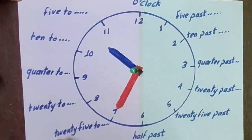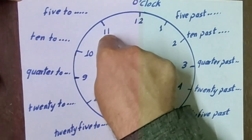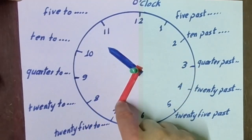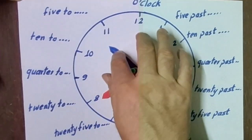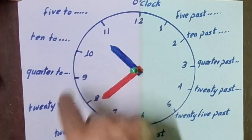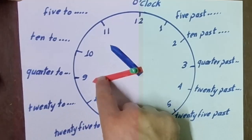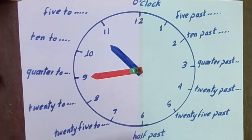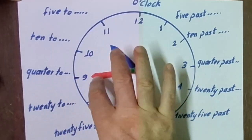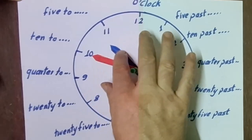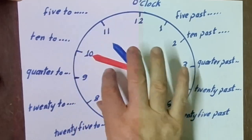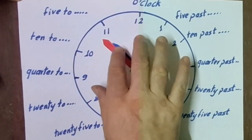When it goes to 7, we start to say 'to' instead of 'past', so it's 'twenty-five to 11.' When it goes to 8, it will be 'twenty to 11.' When it goes to 9, it will be 'quarter to 11.'